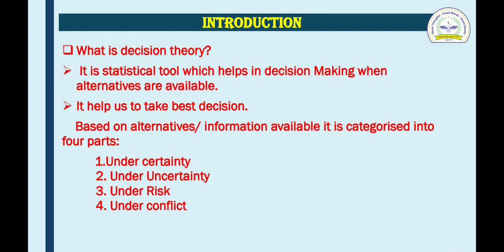Based on alternatives or information, decision theory is categorized into four parts. Number one: under certainty. Under certainty means when we take a decision under certainty, it will be possible when all the information are accurately given. Number two: under uncertainty. Under uncertainty means the information is not given properly — that is, given in a random way.